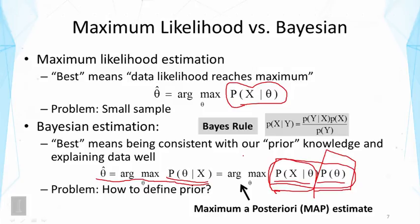If we have an informative prior with some bias toward certain values, the MAP estimator allows us to incorporate that. However, the problem is how to define the prior. There is no free lunch — if you want to solve the problem with more knowledge, that knowledge must be reliable. Otherwise, your estimate may not necessarily be more accurate than the maximum likelihood estimator.